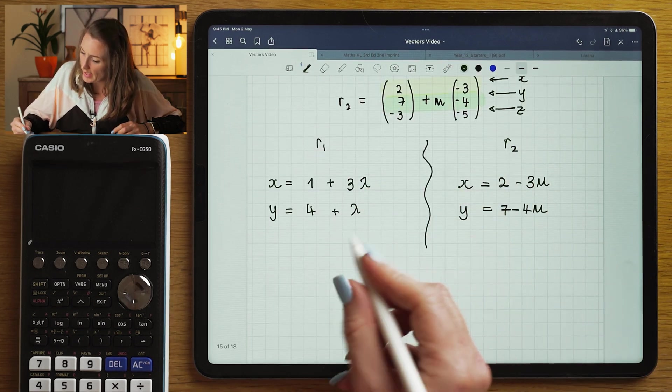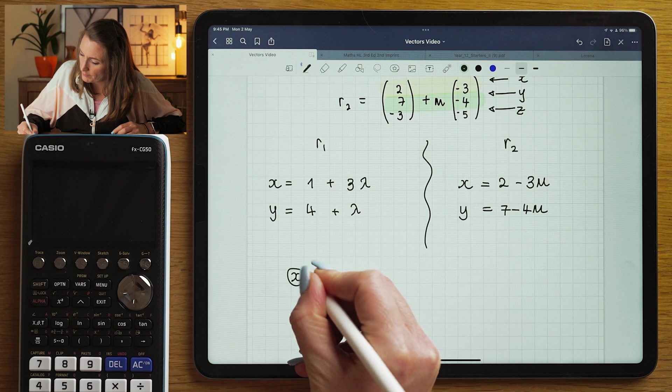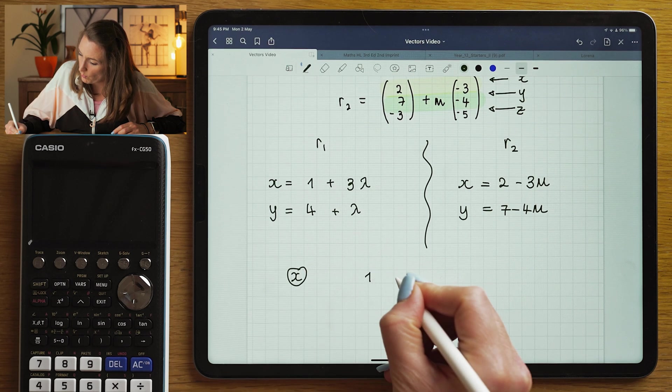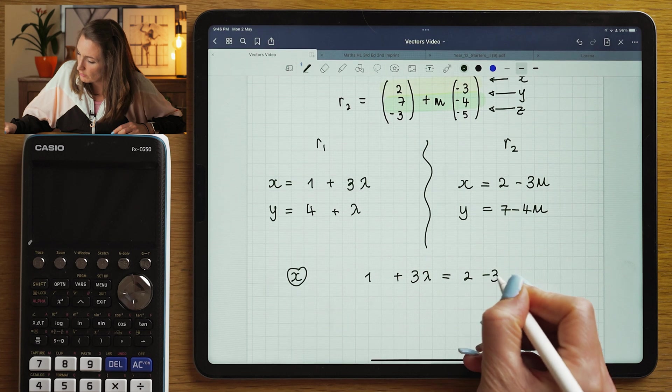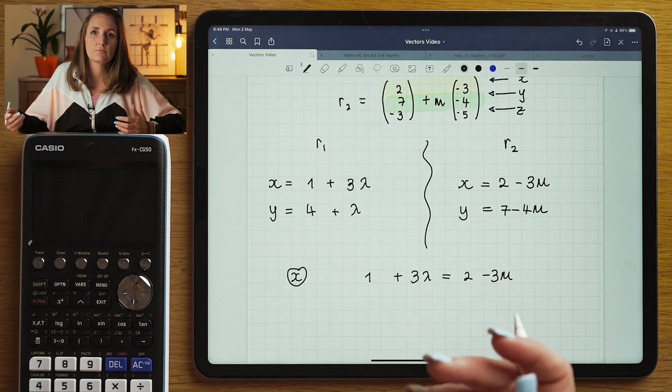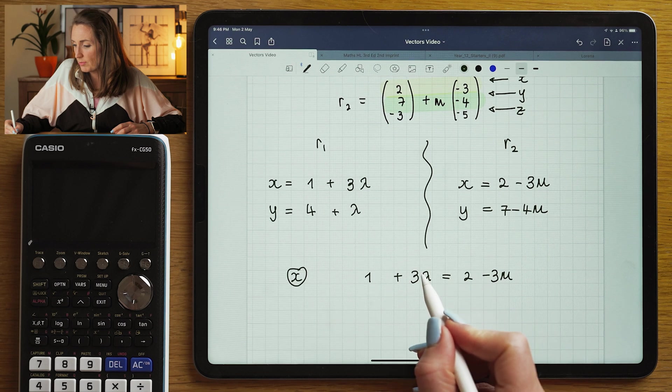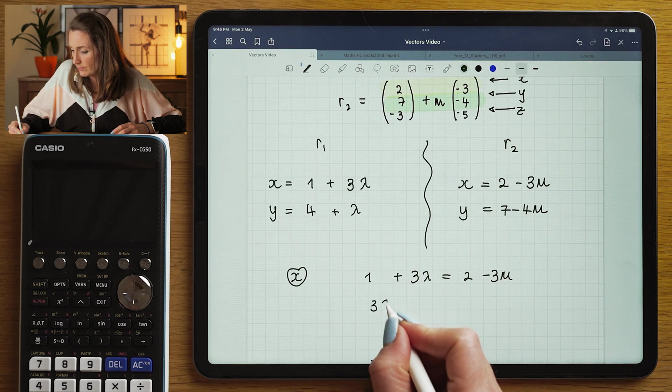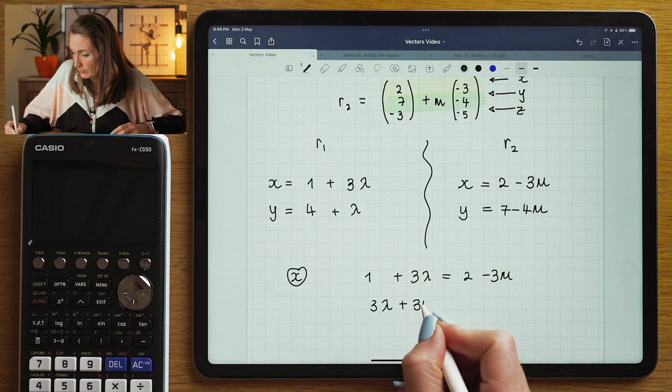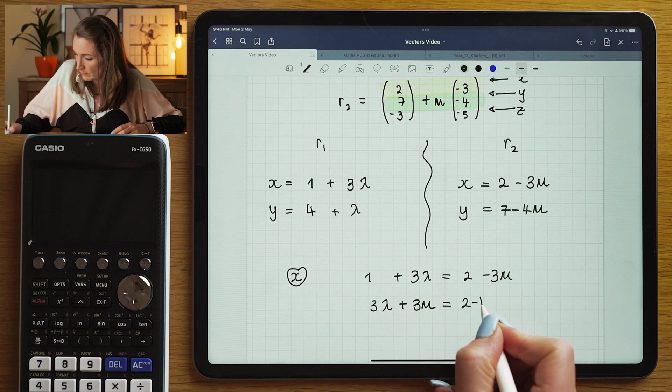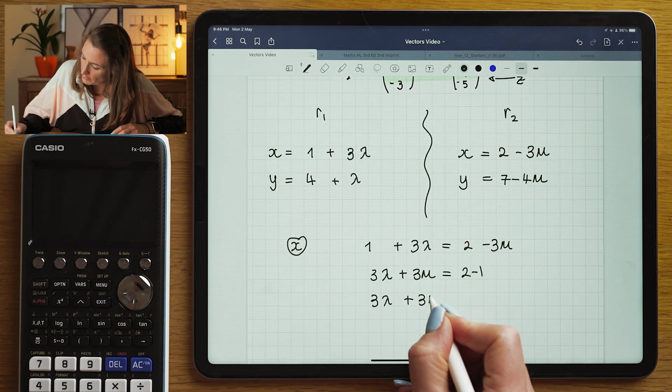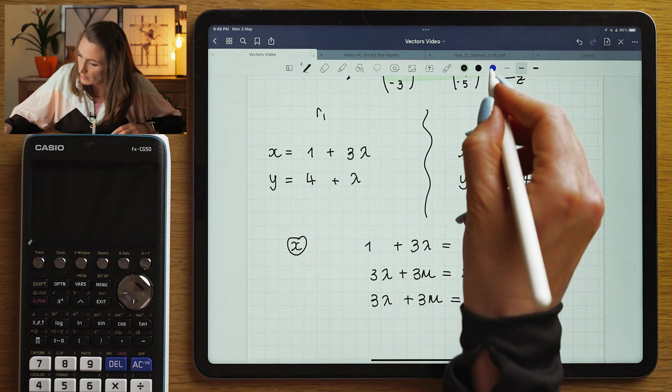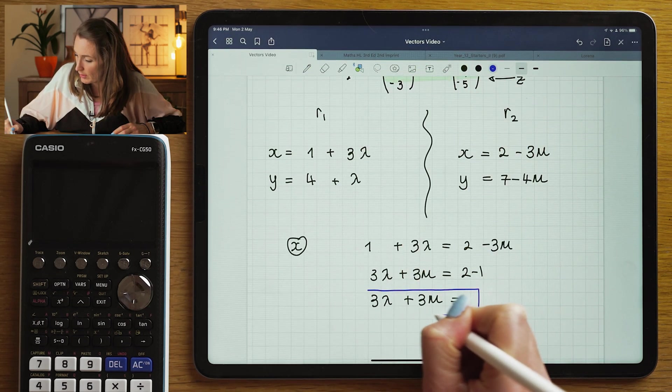Okay, so I'm going to let my X equations equal to each other by saying 1 plus 3 lambda is equal to 2 minus 3 mu. And I'd like this to look more like a traditional simultaneous equation, so I'm going to bring the 3 mu to the other side. So 3 lambda plus 3 mu should equal to 1. That's the first equation that I'm going to work with.